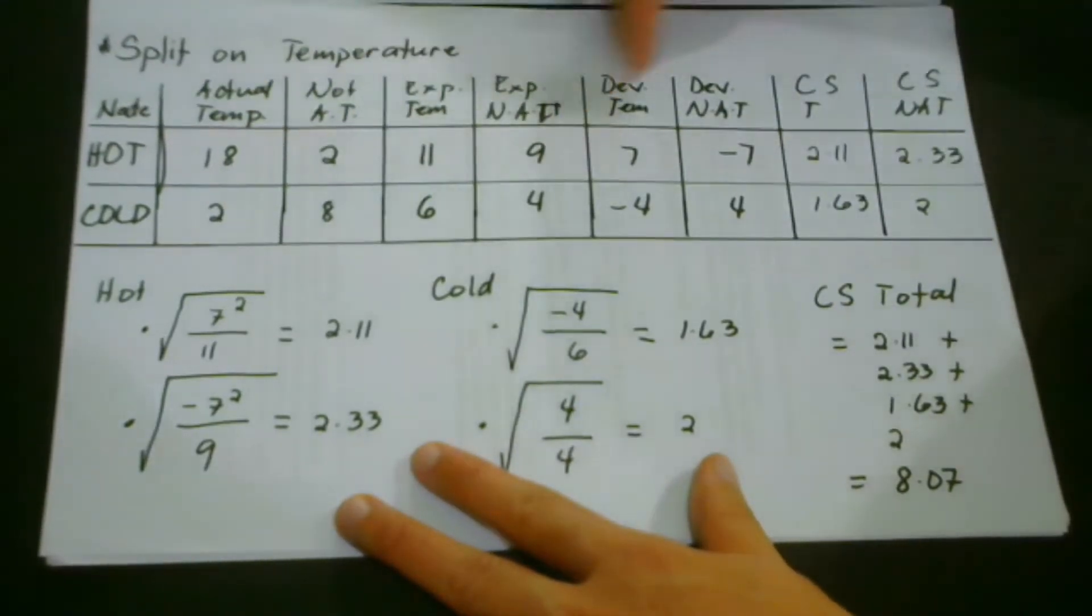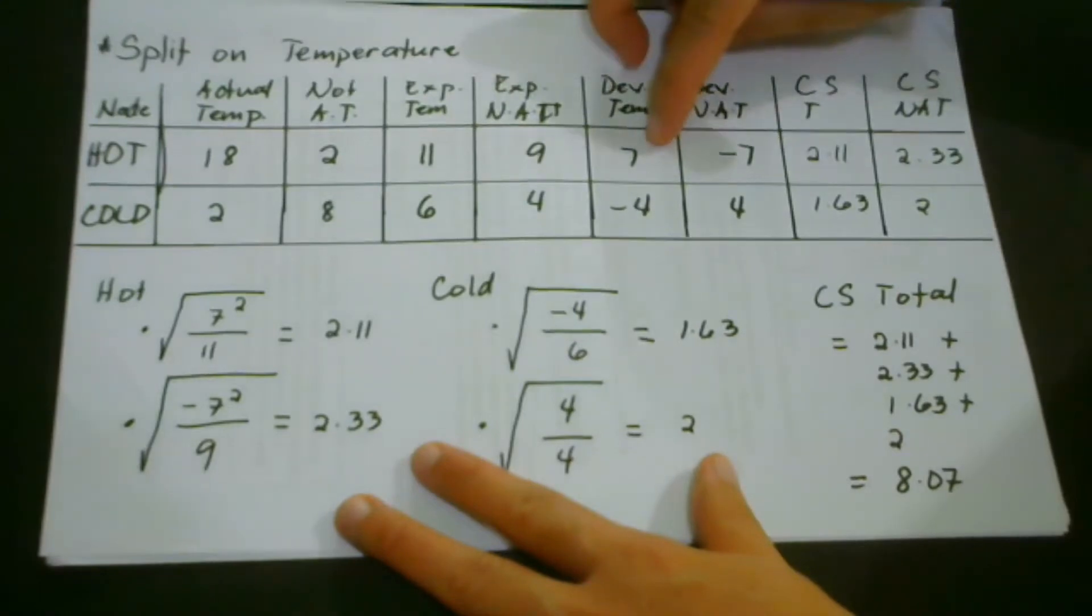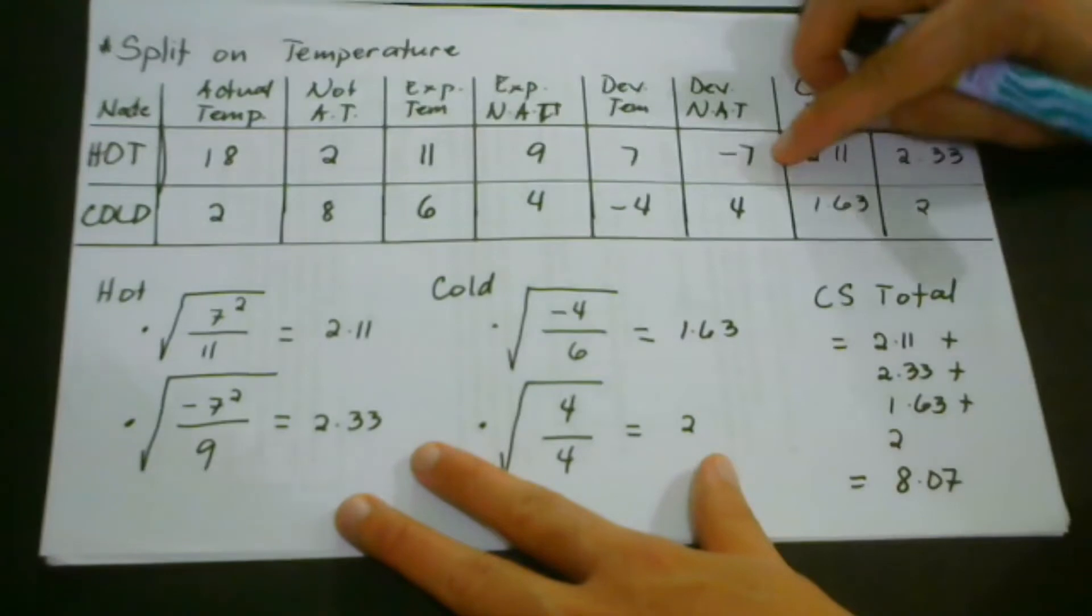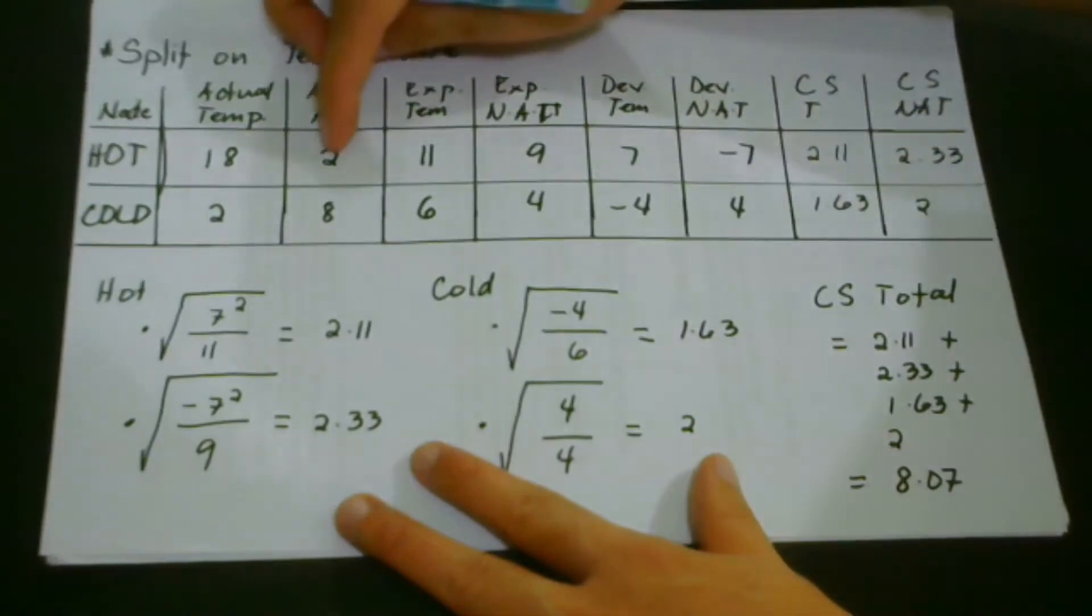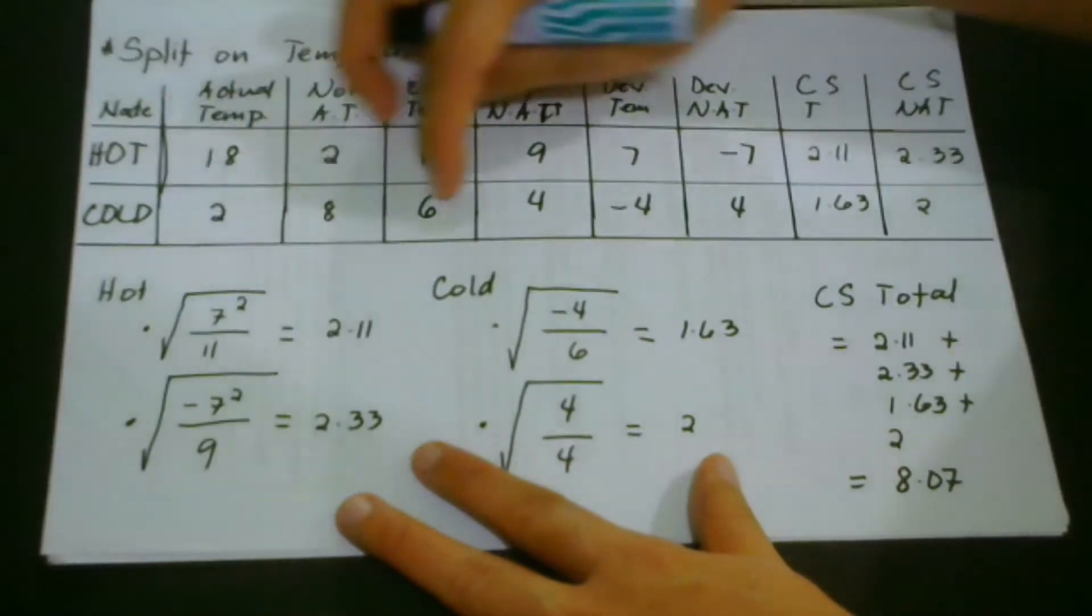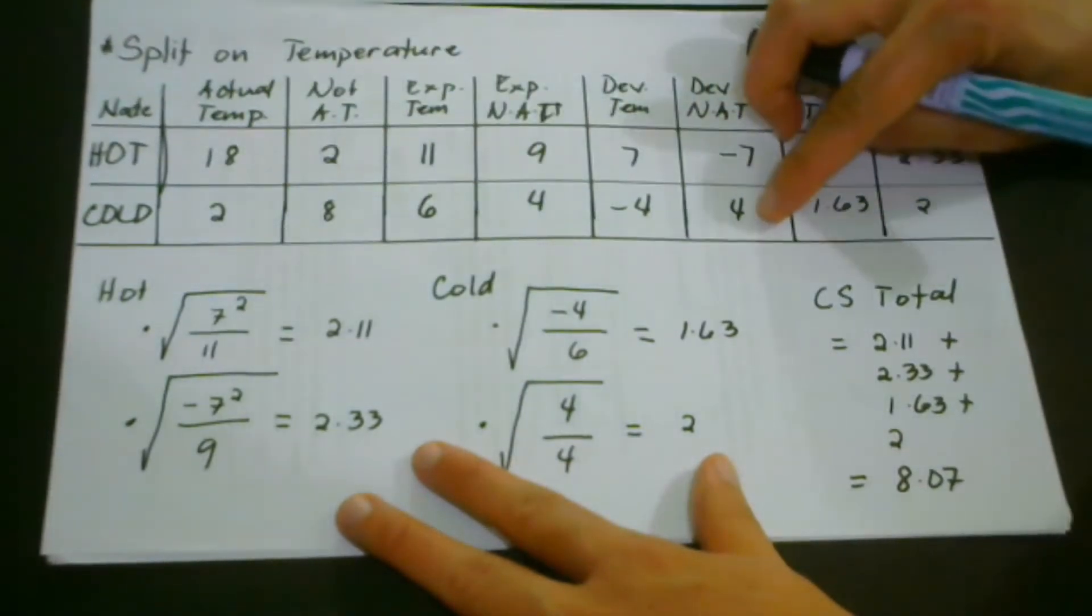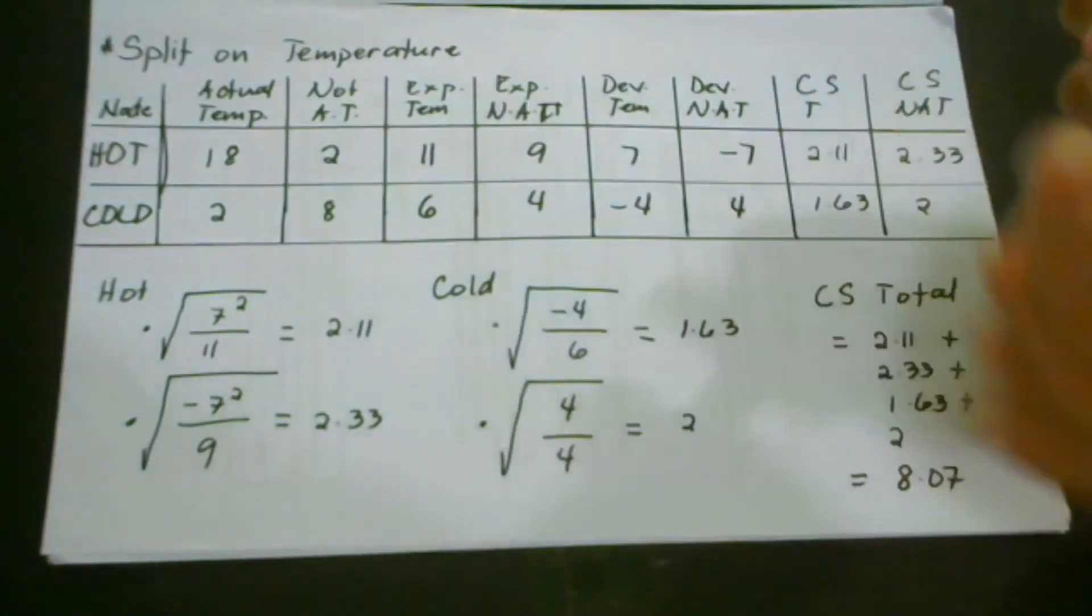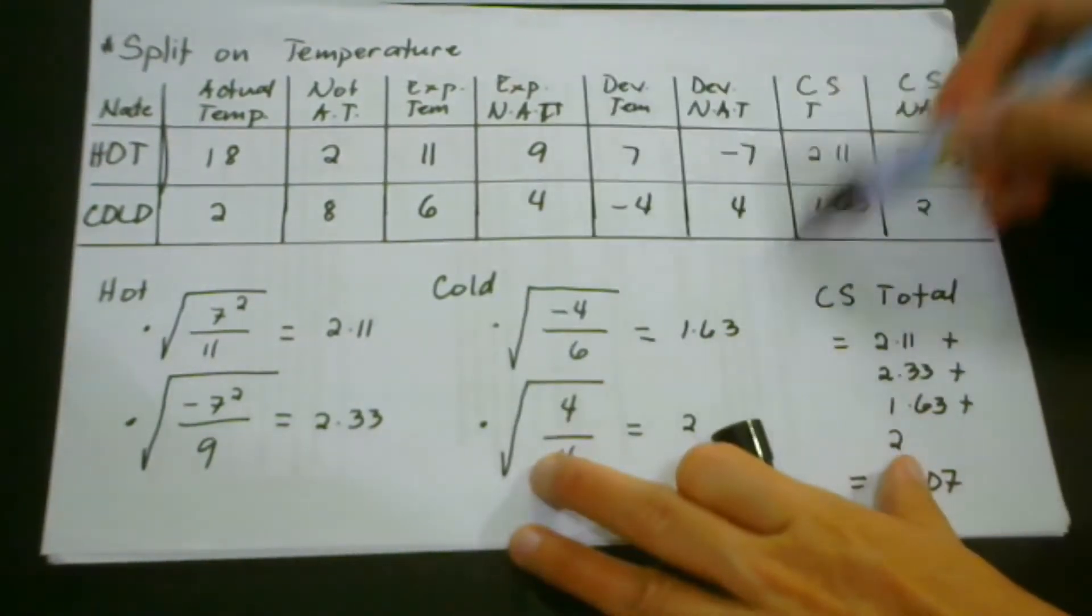And then here we have the deviation temperature. And how do we get this deviation temperature? We simply deducted this one from this one. So for seven, we have ten minus eleven. And for the negative seven, we have two minus nine. Then for negative four, we have two minus six. And then for four, we have eight minus four.